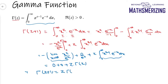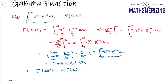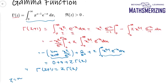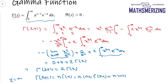Now suppose I take z as some natural number n. Then I can write gamma(n+1) equals n times gamma(n). I can write gamma(n) as n minus 1 times gamma(n minus 1), and similarly gamma(n+1) equals n times (n minus 1) times (n minus 2) times gamma(n minus 2), continuing down until we reach gamma(1).